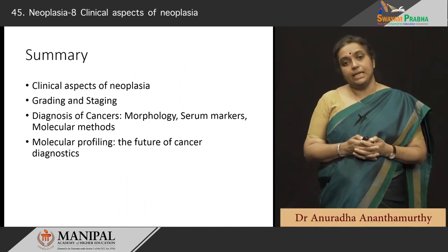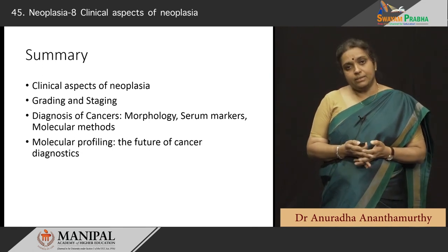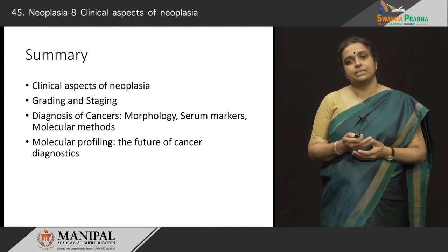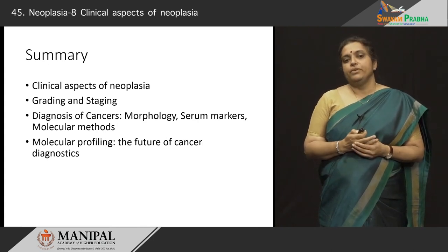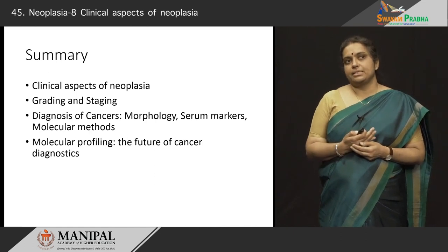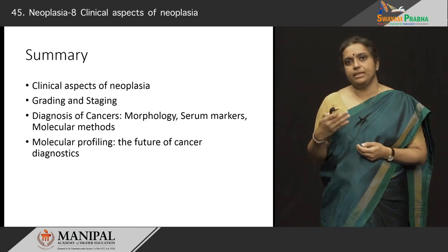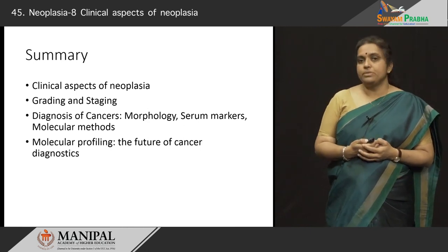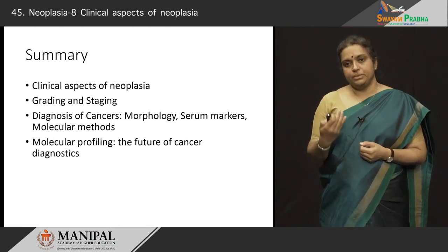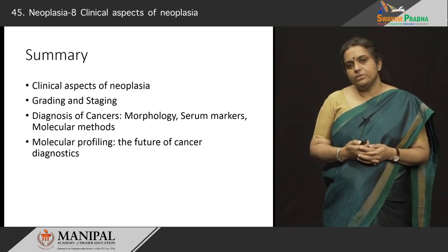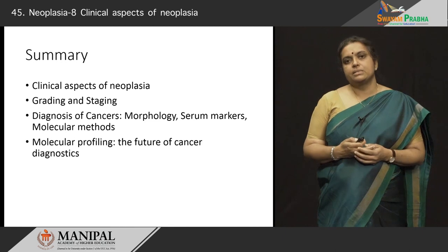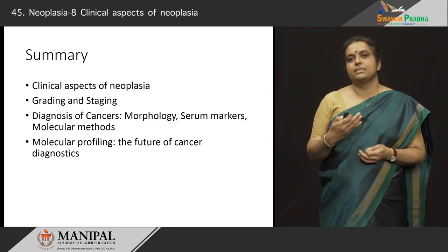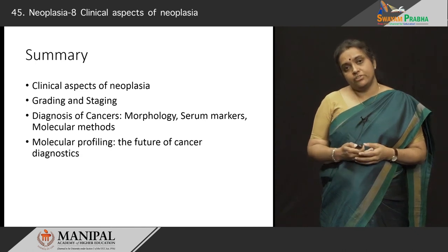In summary, in this session we discussed the clinical aspects of neoplasia — why it causes the effects we see in patients, such as its location causing problems, bleeding, obstruction, infection, cachexia, and paraneoplastic syndromes. We also discussed the grading and staging of cancer — grading being the level of differentiation and staging being the extent of tumor spread. We talked about the diagnosis of cancers, done through morphology, serum markers, and molecular methods, as well as molecular profiling, mutation analysis methods, and next generation sequencing, which are revolutionizing the way we diagnose and treat cancers. Thank you.